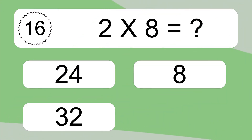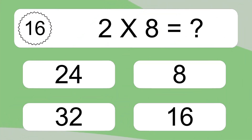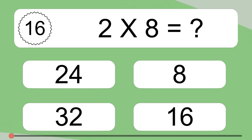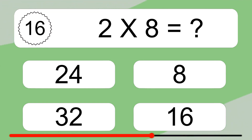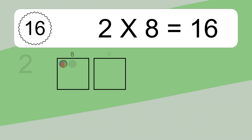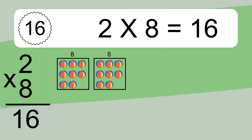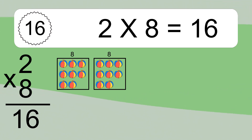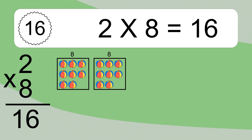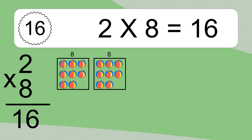2 times 8 equals what? 2 times 8 equals 16. We have 2 boxes, and each box has 8 colorful balls inside. If you count all the balls in all the boxes together, you will have 2 times 8 balls. This equals 16 balls.